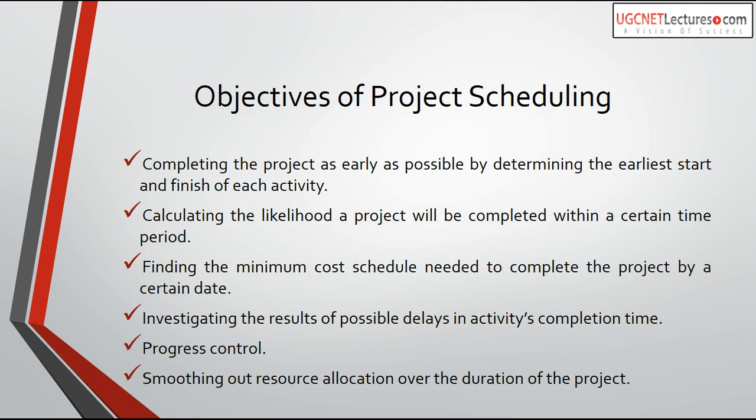The first objective of project scheduling is completing the project as early as possible by determining the earliest start time and finish time of each activity. Some activities depend on each other, meaning we cannot start one activity before completing the previous one. For example, coding cannot be done before designing, and designing cannot be done without requirement analysis. These activities are serial — first we do requirement analysis, then designing, then coding. Each activity is assigned a start time, finish time, and resources like person and time.